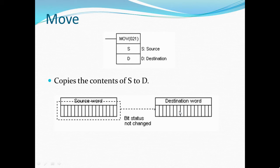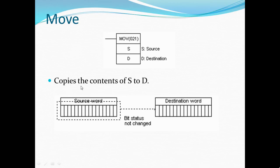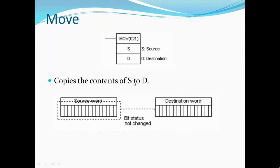Move function copies the contents of S as source to D destination. Source word and destination word. In this process there is no bit status change.